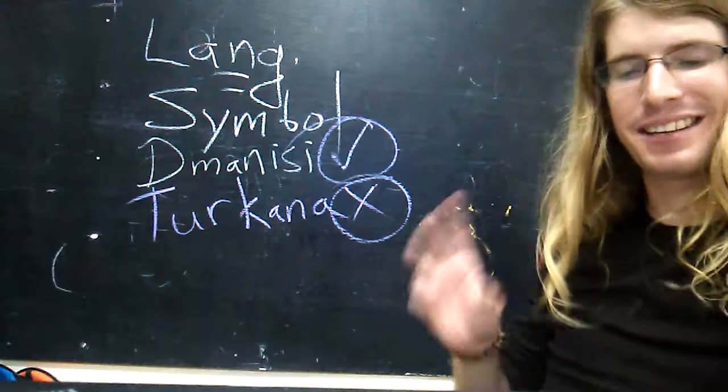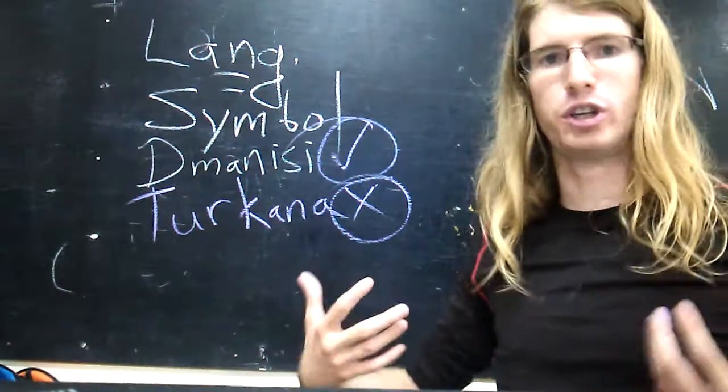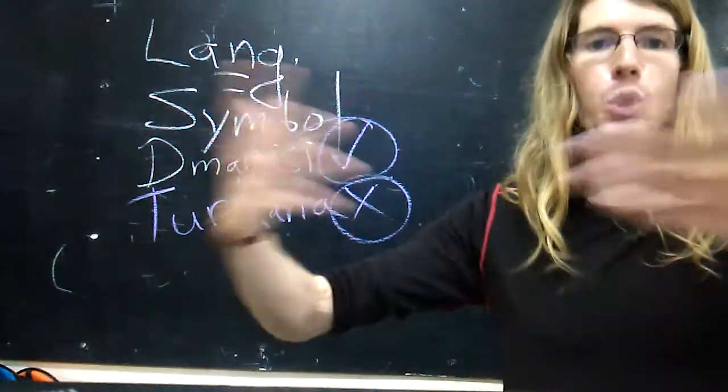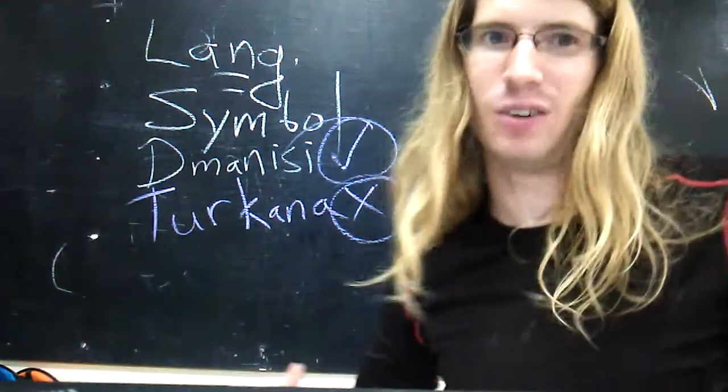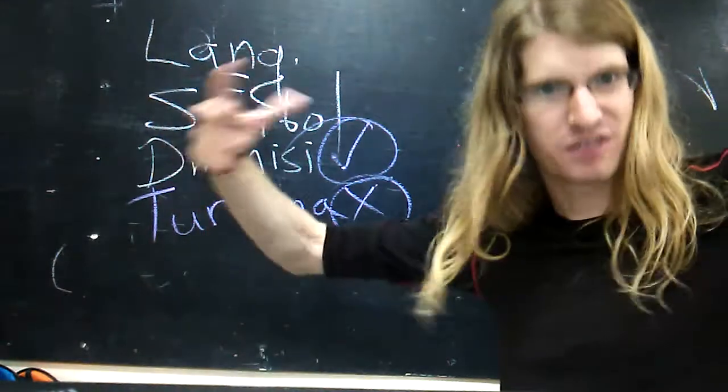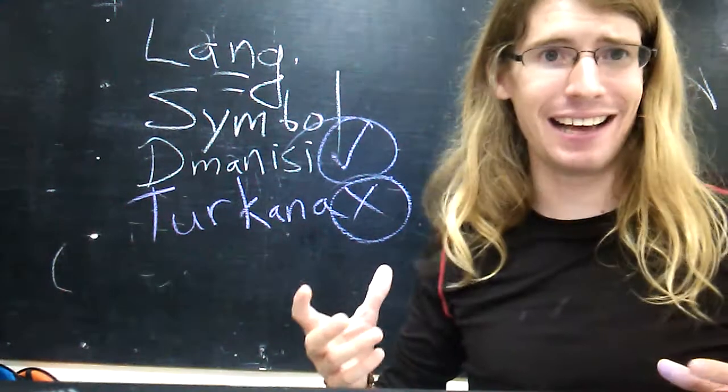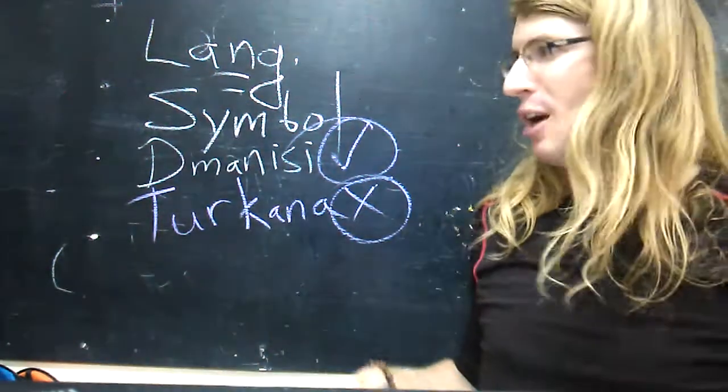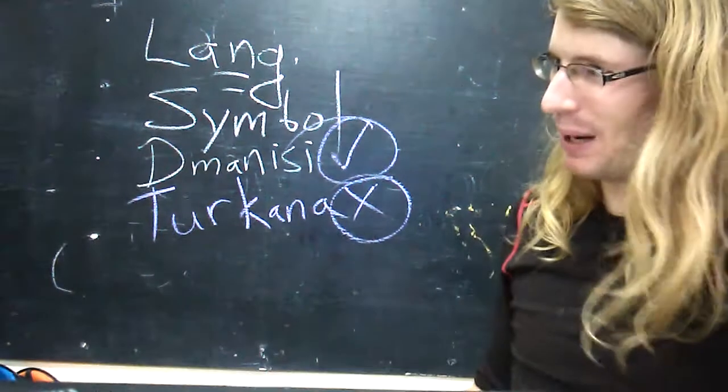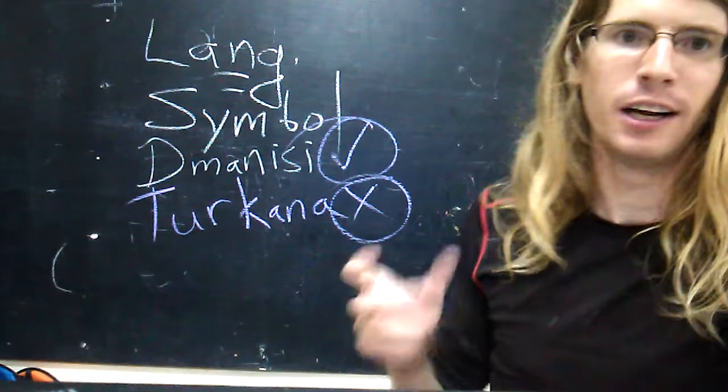I do doubt though, even if the Dmanisi hominids were able to speak, I doubt that they just woke up one day and started making sentences. I do like to think that they had gradually developed what we would call words, maybe very simple nouns for things like food or animal names or maybe words for things like the sun or physical world items. Or maybe they could have even had names for each other. Maybe if my friend really likes to eat berries I could call him Berry. I think they could have had these very simple, we would almost say pre-linguistic words.